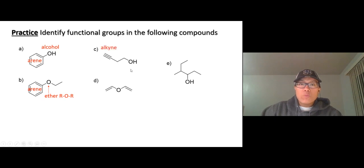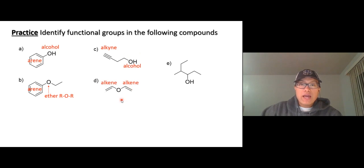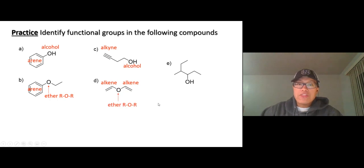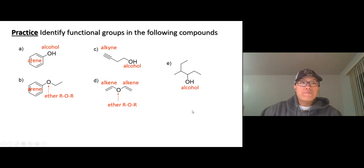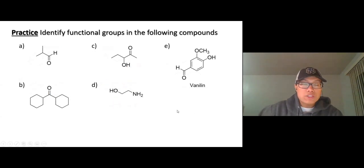In compound C, we have an alkyne and an alcohol. In compound D, there's an alkene and an alkene, and in the middle an oxygen between carbon chains — that's an ether. In compound E, super simple — that's just an alcohol.